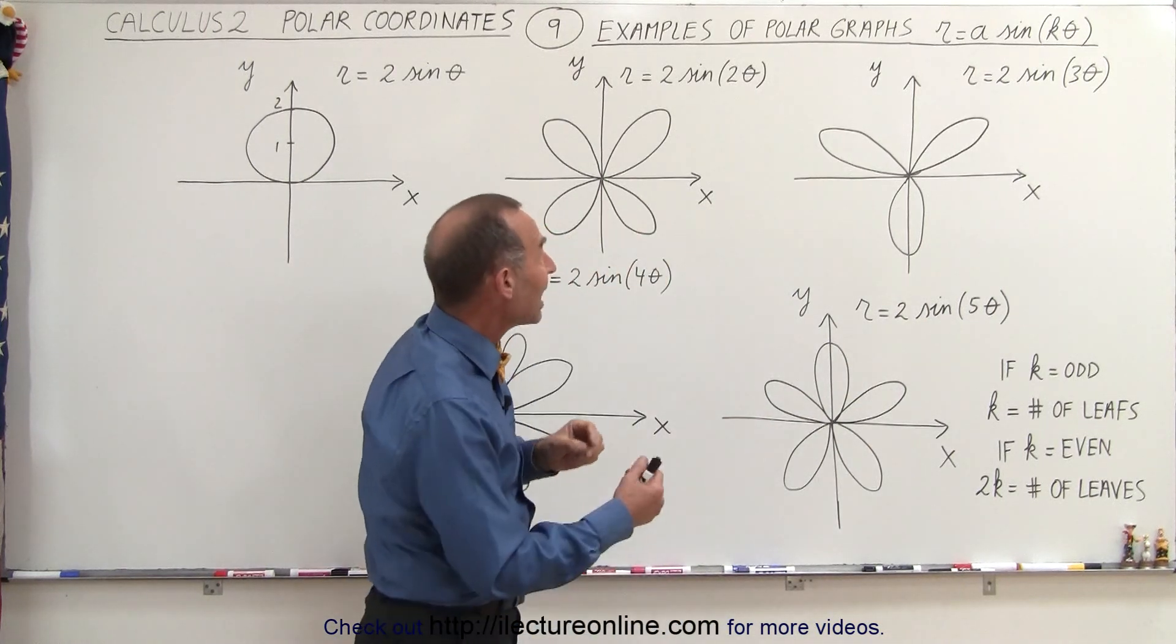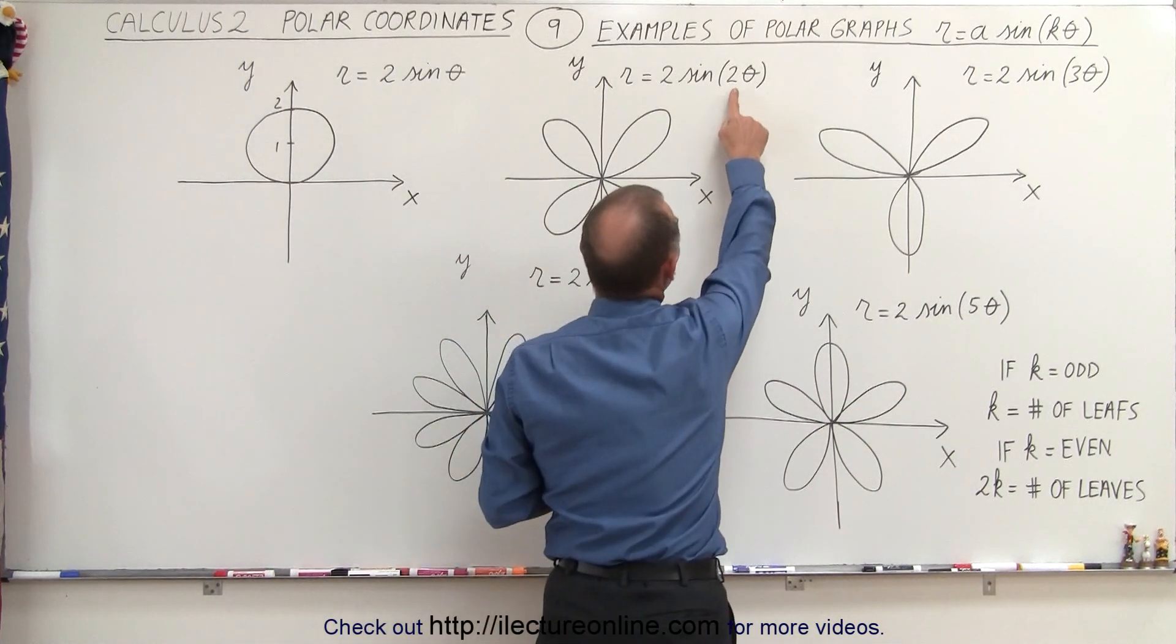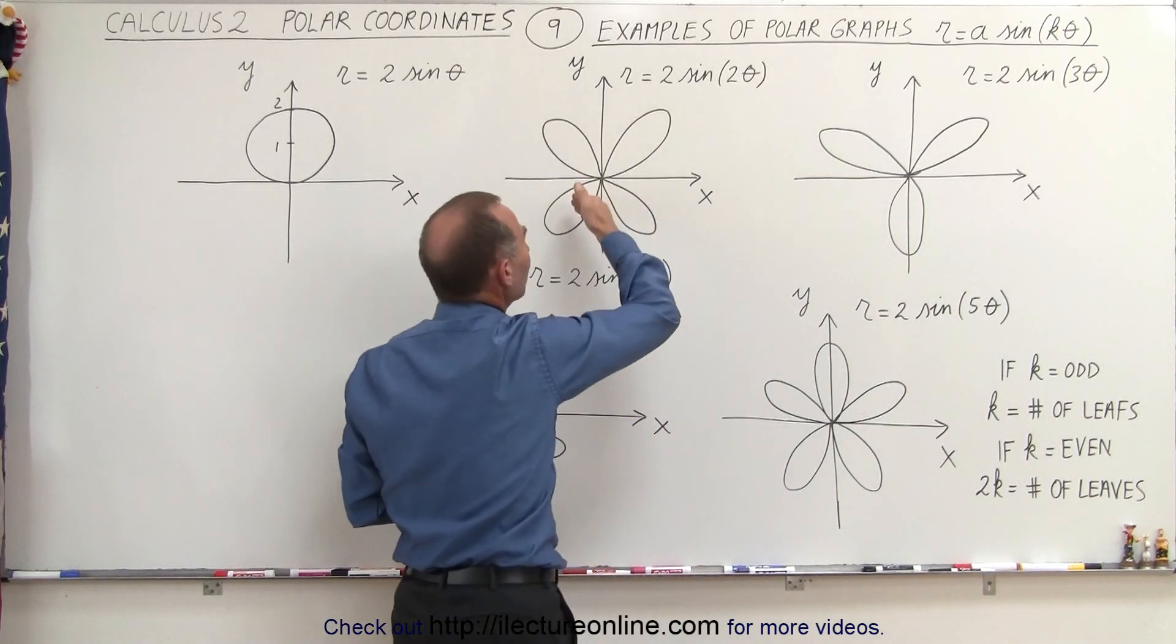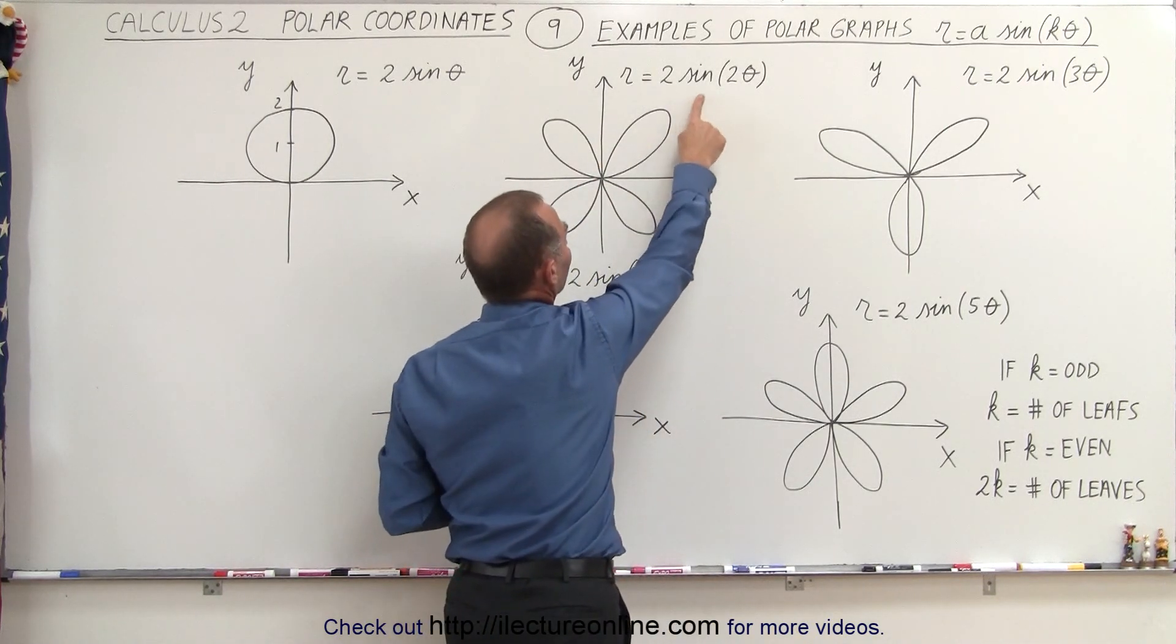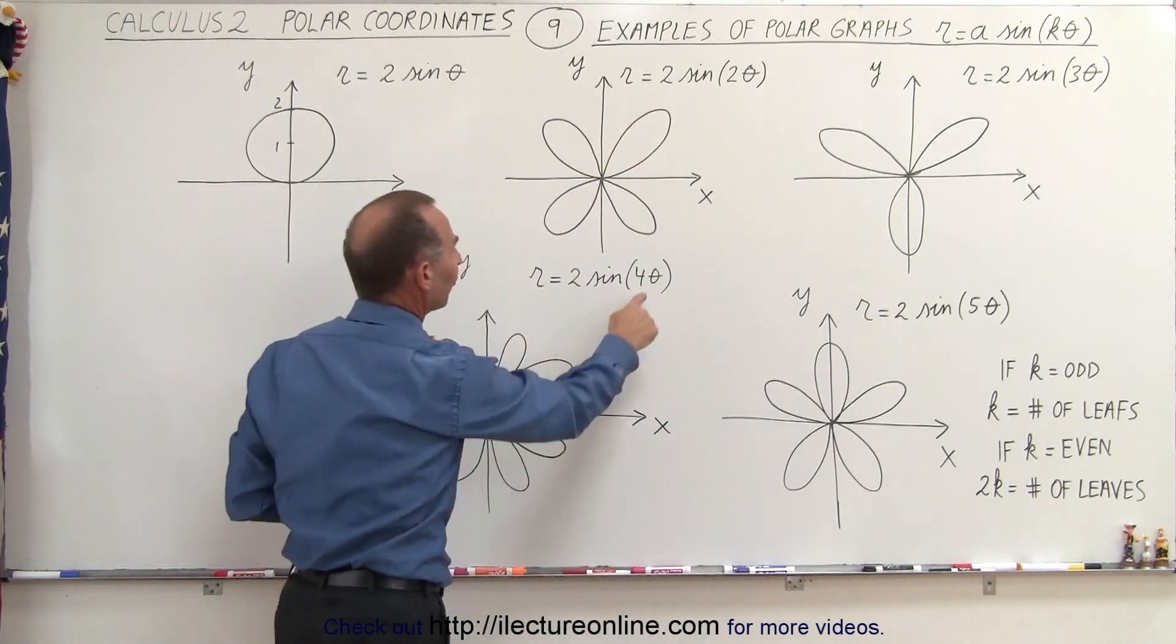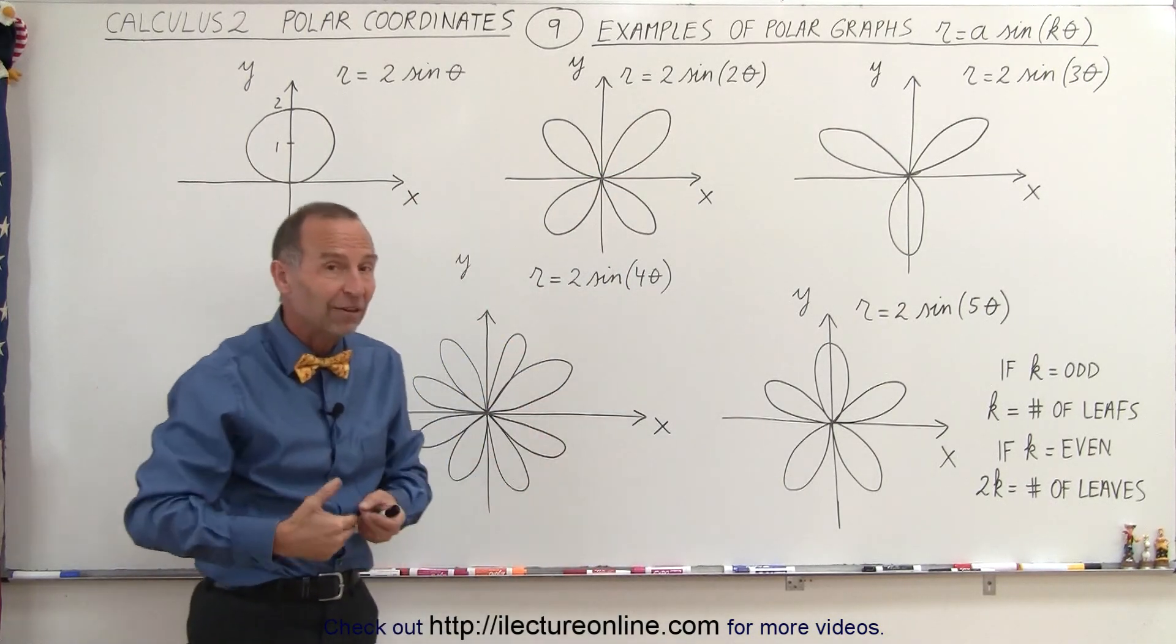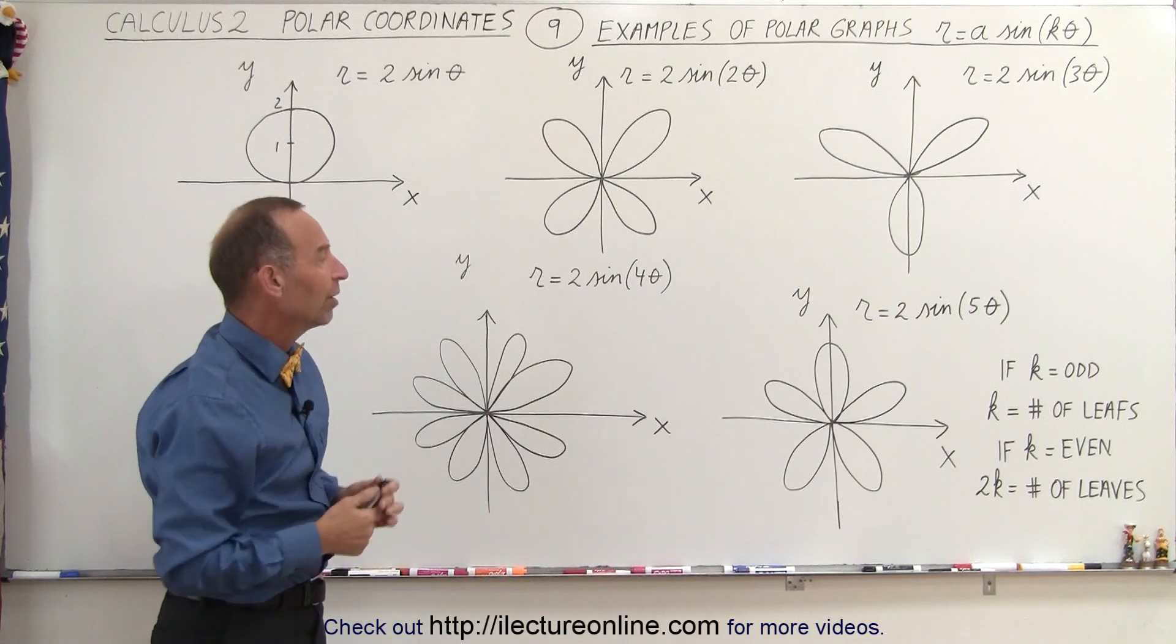But when the number k, the constant in front of theta, is an even number, then there's twice as many leaves as the number. So the sine of 2 theta, there's 4 leaves. And the sine of 4 theta, there's 8 leaves. And so the assumption is the sine of 6 theta would be 12 leaves.